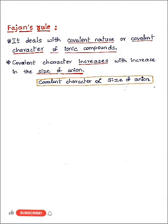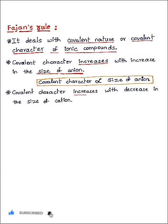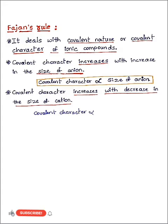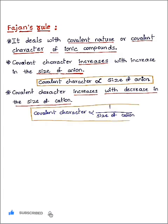One more point of this Fajan's rule: covalent character increases with decrease in the size of cation. That can be written as covalent character is inversely proportional to size of cation. That means when the size of cation is decreased, then the covalent character of the compound will be increased.